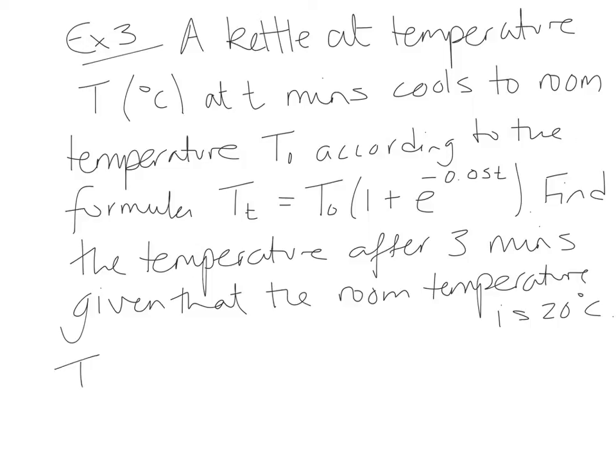So that means that T0, which is the room temperature, must be 20, and that small t must be 3, because that was the number of minutes. And we've been given the formula. So we'll do the working on the next slide. So I'll just rewrite the formula first of all.